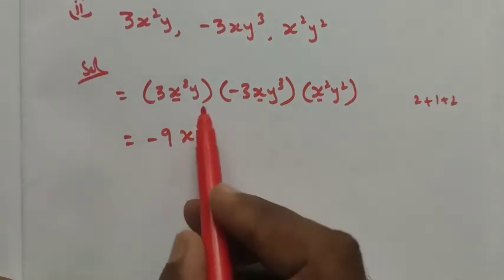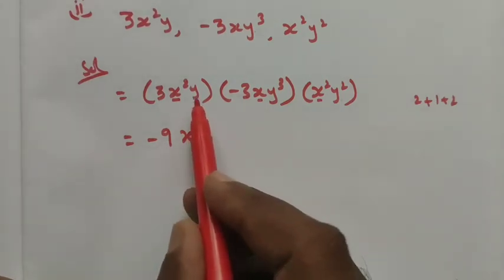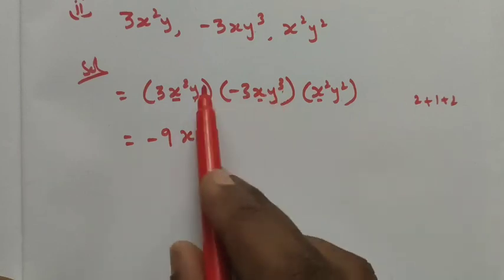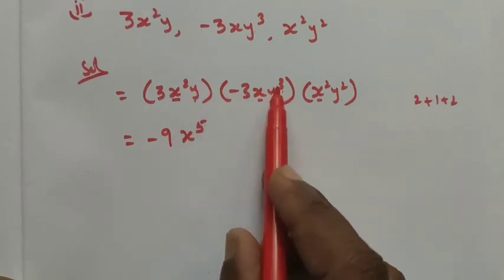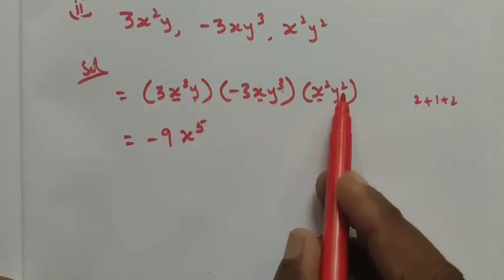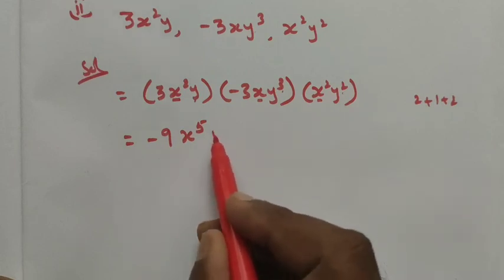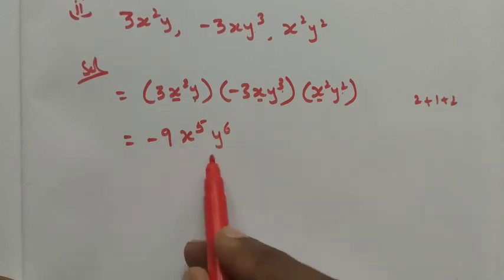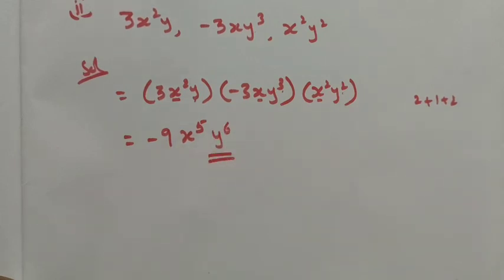For y: we have powers 1, 3, and 2. So 1 plus 3 is 4, and 4 plus 2 is 6, giving y⁶. Therefore the final answer is minus 9x⁵y⁶. Thank you, students.